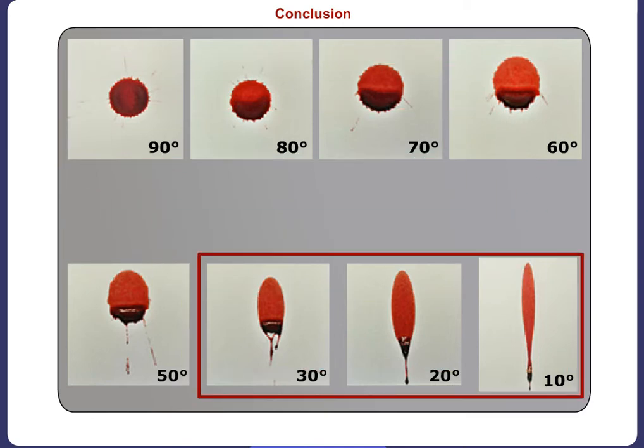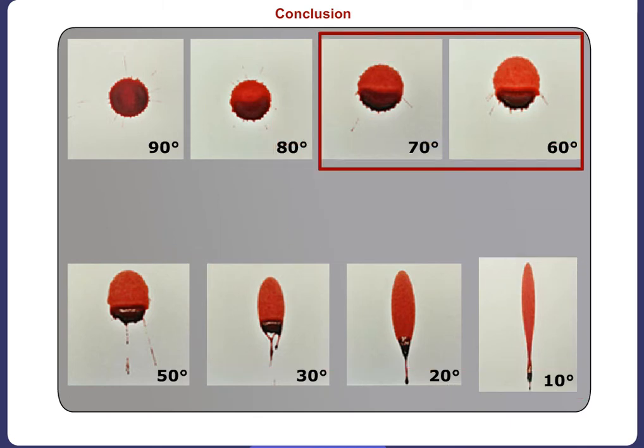The more elliptical or elongated the shape, the more acute the angle of impact is. As the angle of impact decreases, one side of the stain will show greater evidence of spines, scallops and satellites. When the angle of impact is between 40 and 70 degrees, the outflow of blood is likely to create spines, scallops and satellite spatter oriented to one side of the stain. The spines and satellite stains make directionality quite evident.